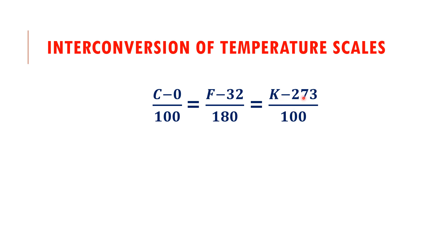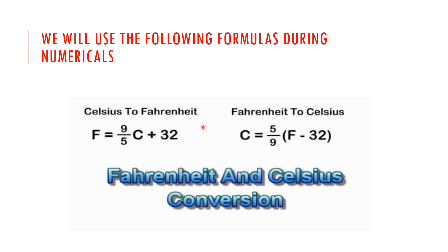K stands for Kelvin; the freezing point of water is 273 and there are 100 equal divisions between 273 and 373. For numerical conversions: to convert Celsius to Fahrenheit, use F = (9/5)C + 32. To convert Fahrenheit to Celsius, use C = (5/9)(F − 32).